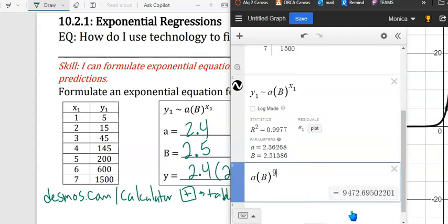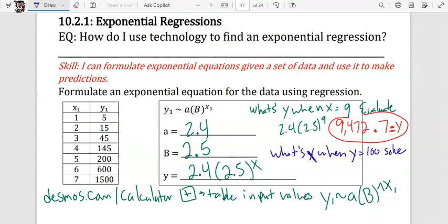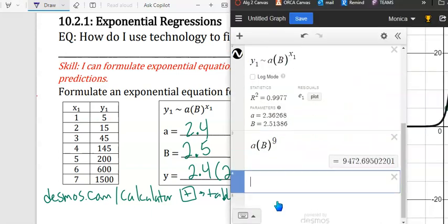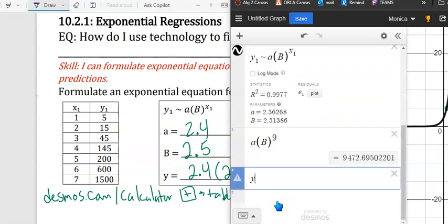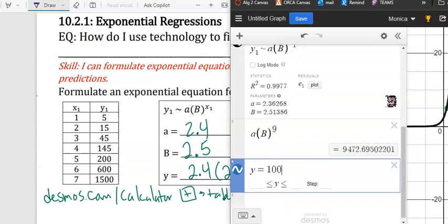Let's do another one. What is X when Y equals 100? You would solve the equation: 100 equals 2.4 times 2.5 to the X power. You could solve it algebraically or put it into the calculator and find the intersection. Y equals 100, find where they intersect.